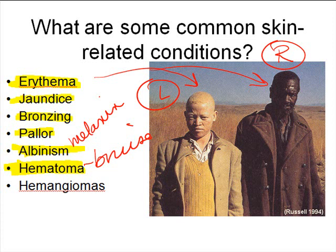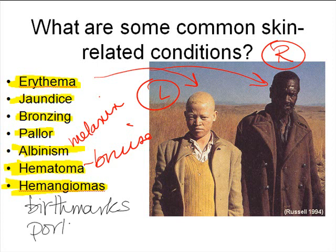Hemangiomas are things that if you have one, you were born with it — these are birthmarks. This is basically just discolored skin, and it's due to benign tumors. A benign tumor is a tumor that is not cancerous; it's just a growth of tissue, usually of the blood capillaries in the dermis. In some cases, hemangiomas fade over time and are not permanent — those are usually called strawberry birthmarks. Then there are some types of hemangiomas that are permanent, referred to as port wine birthmarks because they're a very dark reddish color, like the color of port wine.